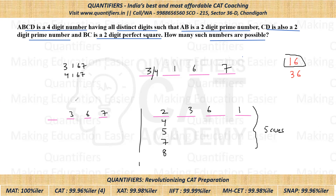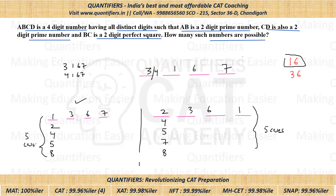Sub-case 2b: BC = 36, CD = 67. AB is a prime ending in 3. Valid options: 13, 23, 43, 53, 83. We eliminate 63 (not prime, 6 used), 73 (7 is used), and 93 (not prime). This also gives five possible cases.